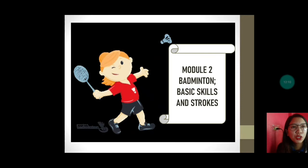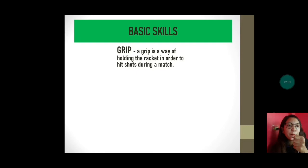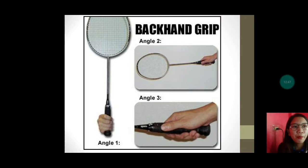Tapos na tayo sa Module 1. Let's proceed to Module 2: badminton basic skills and strokes. Under basic skills, we have the grip — a grip is a way of holding the racket in order to hit shots during a match. Meron tayong backhand grip and forehand grip. Sa backhand, kung mapapansin, yung kamay niya ay nakapush doon sa may handle.